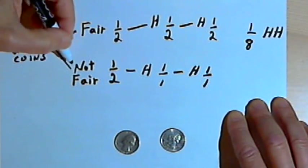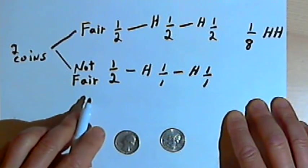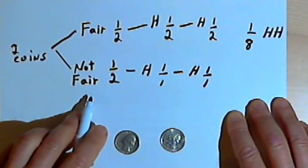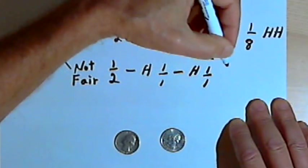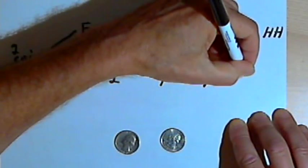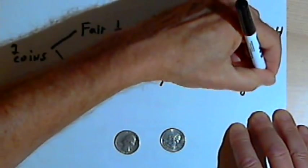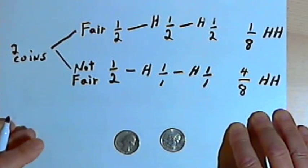So the probability for this branch of the tree is going to be one-half, the probability of it not being a fair coin, times one times one, which is just one-half. Let's write that as 4 eighths, since we're going to be dealing in eighths anyway. It's 50% no matter how I write it.